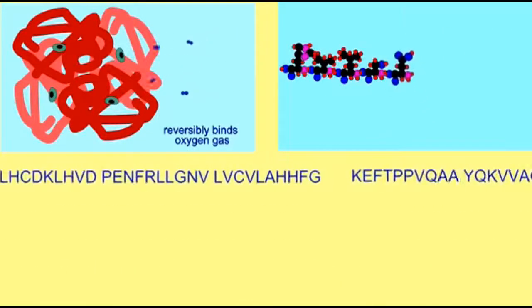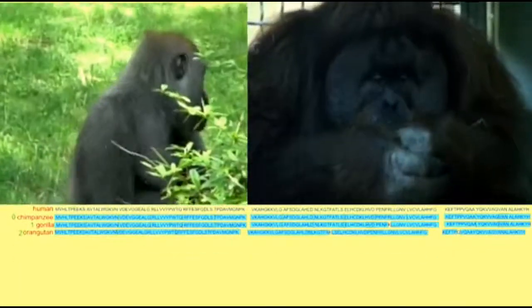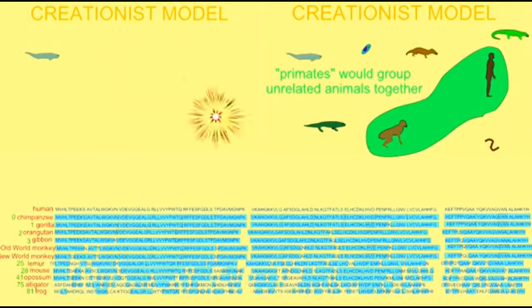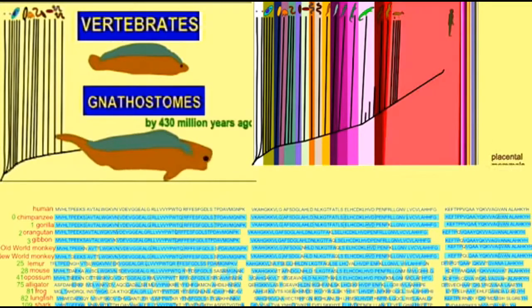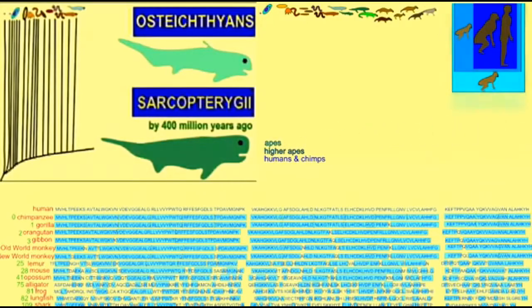As evolution and speciation continues, the amino acid sequence of the protein hemoglobin continually changes in different lineages. One can actually determine a genetic family tree based on degrees of genetic relatedness by comparing amino acid structures of proteins, such as those of hemoglobin.